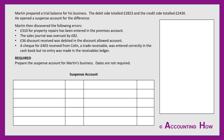We have an example question and there are a couple of ways you could approach this. You might decide to pause now if you feel relatively confident and have a go, then check against your own work. Or if you just want a bit of revision or are starting from scratch, you might just continue and work through the question with me. Martin prepared a trial balance for his business — the debit side totalled £2,823 and the credit £2,430. He opened a suspense account for the difference and then found some errors.